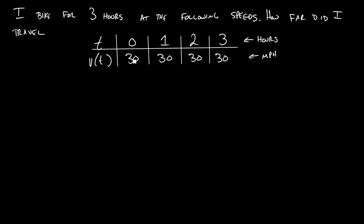At hour 0, I was traveling 30 miles an hour. 1, 30 miles an hour. 2 and 3, same thing, right? And so how would I work with this table to figure out how far did I travel, just like the last problem? We can see that it's the same thing.